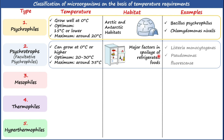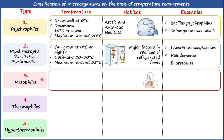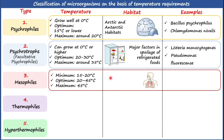Listeria monocytogenes and Pseudomonas fluorescens are very good examples of psychrotrophic bacteria. Moving to the third type, mesophiles are known to grow at a minimum temperature of 15 to 20°C, with an optimum temperature of 20 to 45°C.